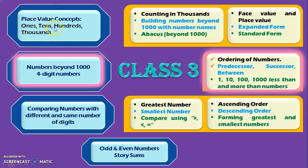There are two videos for the place value concept learning outcome — the links for those two videos are also provided below in the description box. In the first video for number activities for 4-digit numbers, we saw what is ordering of numbers and did a few examples. Then we understood what predecessor, successor, and between numbers mean and did sums with respect to this concept. The link for that video is also provided below.